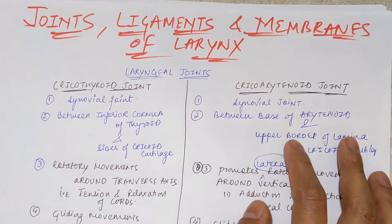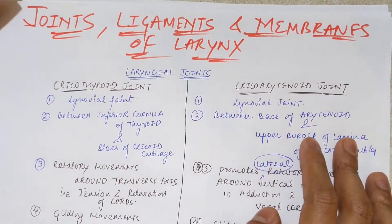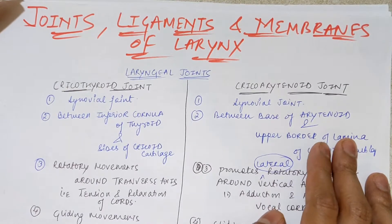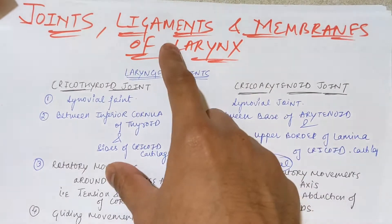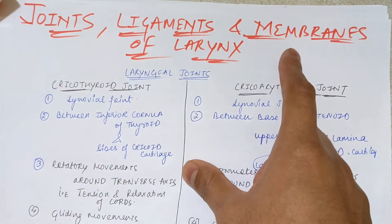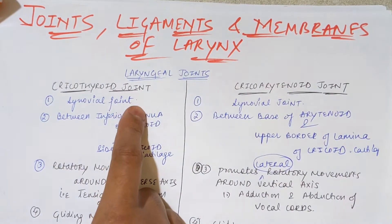Hello everyone, this is Soyesh here. We are again in the section of our larynx. This is the fourth part of the larynx in which we are going to discuss the joints, ligaments, and membranes of the larynx. First of all, we are in the section of joints.